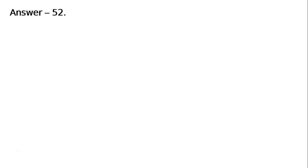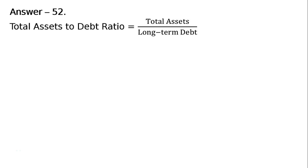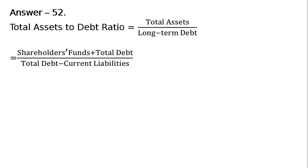Question 52: Calculate total asset to debt ratio. Total asset to debt ratio is equal to total assets upon long-term debt. Shareholders' funds plus total debt is equal to total assets, because shareholders' funds is the full amount of share capital, reserves, etc., and total debt means long-term debt plus current liabilities.